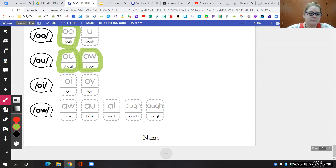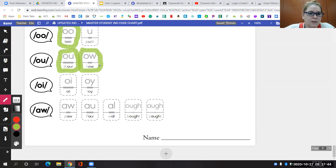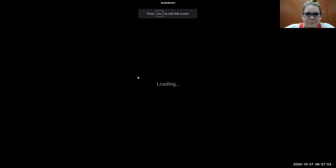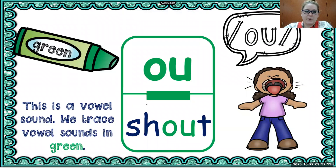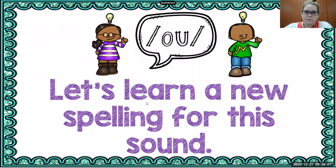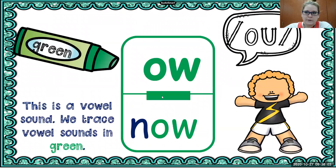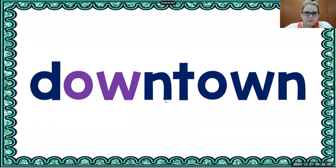Which one is more common in the way that we spell the ow sound? Definitely the O-U is more common. The power bar is much bigger than in the O-W spelling. So we have talked about the ow sound spelled with O-U and with O-W, and we went over several new words with the O-W spelling for ow.